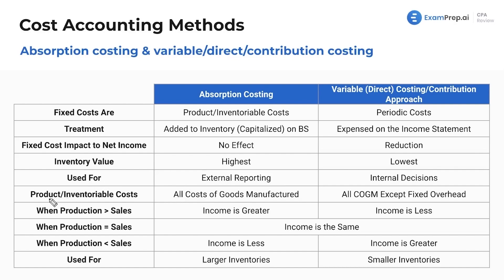Product or inventory costs are capitalized — those are all costs of goods manufactured under absorption costing. Whereas product or inventory costs under the variable direct method would be all costs of goods manufactured except for fixed overhead. Cost of goods manufactured includes materials, labor, and overhead, and we'll refresh that with the formulas for cost of goods manufactured and cost of goods sold.